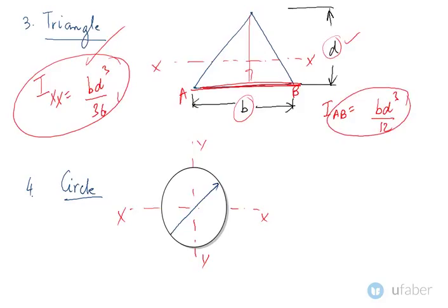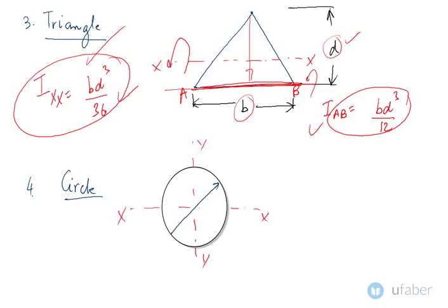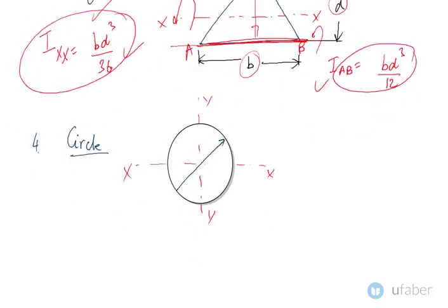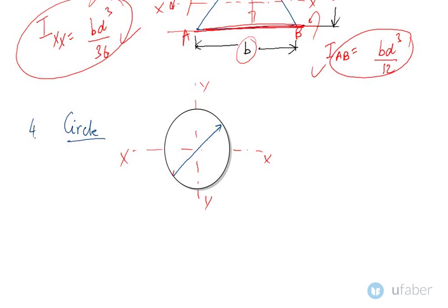For a circular section, let D be the diameter. Since it is a symmetrical body, the moment of inertia comes out to pi by 64 into diameter to the power 4. These four cross sections — rectangular, I-section, triangular, and circular — are very commonly used in engineering, so you need to remember these moment of inertia values.